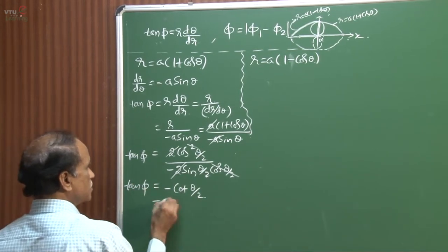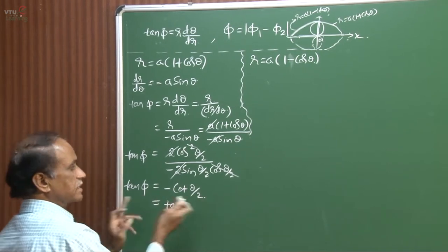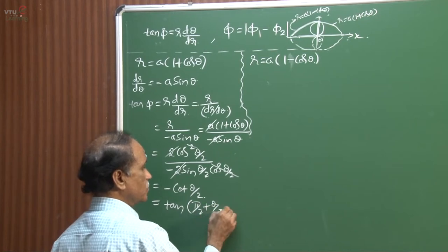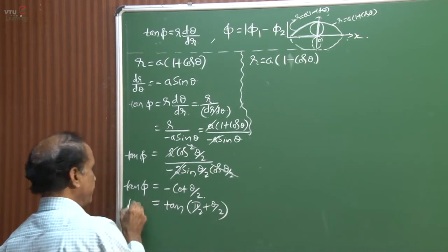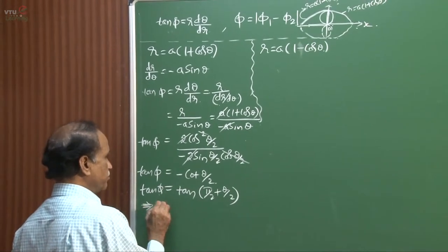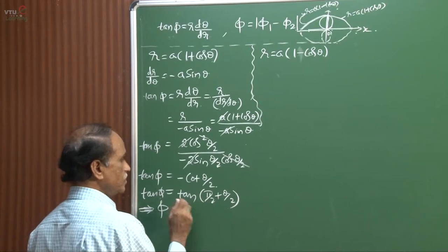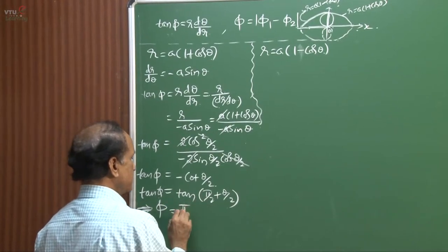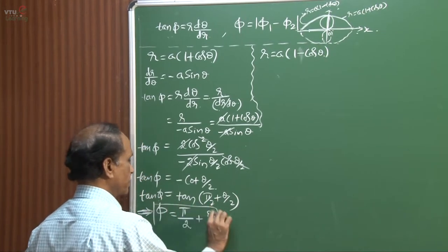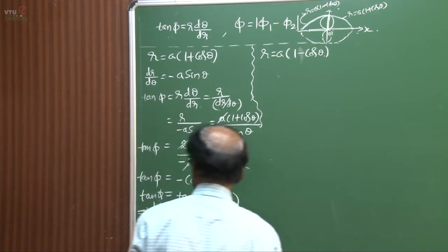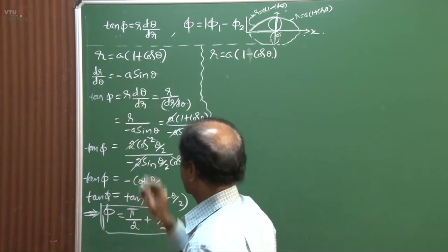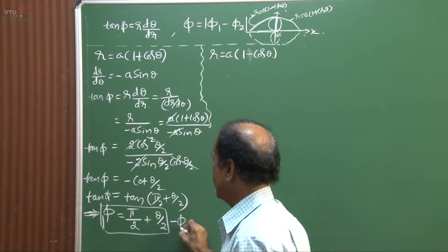Now this must be written in the form of a tan function so that angles can be compared. We write tan φ = tan(90° + θ/2), which gives minus cot(θ/2). This implies φ = π/2 + θ/2. This is the first value — the angle made by the tangent with respect to the first curve. This is called φ₁.